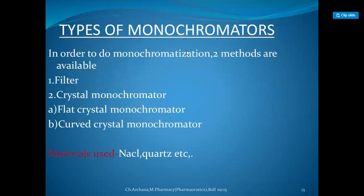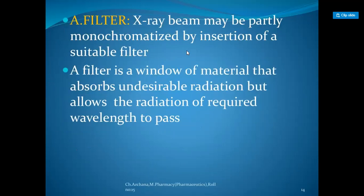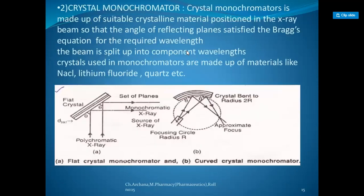For monochromatization, two methods are available: the filter method and crystal monochromators. The X-ray beam may be partly monochromatized by insertion of a suitable filter. A filter is a window of material that absorbs undesirable radiation but allows radiation of the required wavelength to pass.